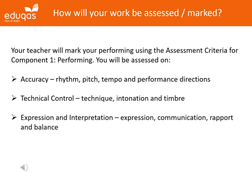Your teacher will mark your performing using the assessment criteria for Component 1 Performing. You will be assessed on accuracy — are your rhythm and pitch secure, is the tempo appropriate, and did you follow performance directions such as dynamics and articulation? Technical control — are your technique and intonation secure, and did you project well using control of timbre? Expression and interpretation — was your performing expressive, did you communicate it well to your audience or teacher, and did you demonstrate rapport and balance with other performers?